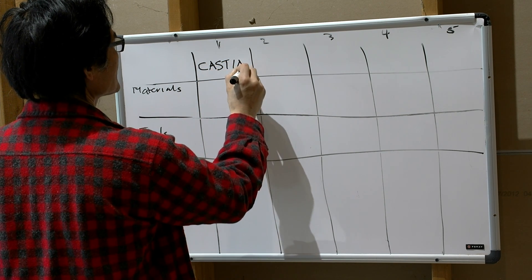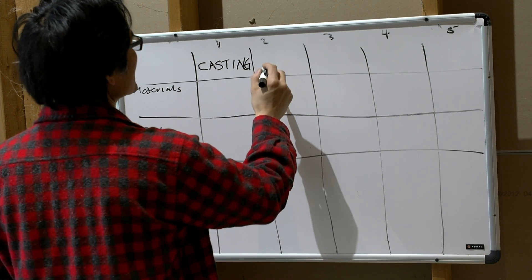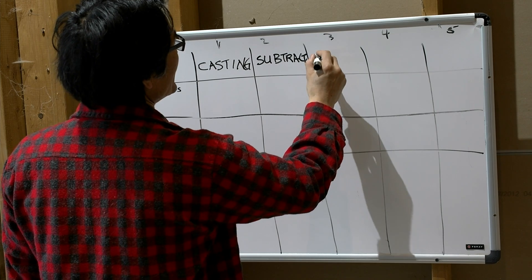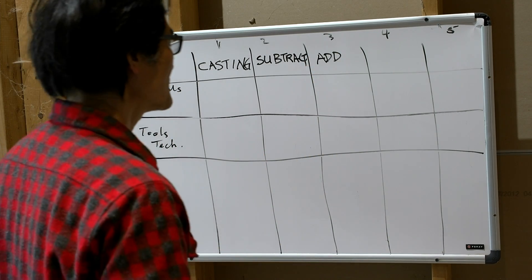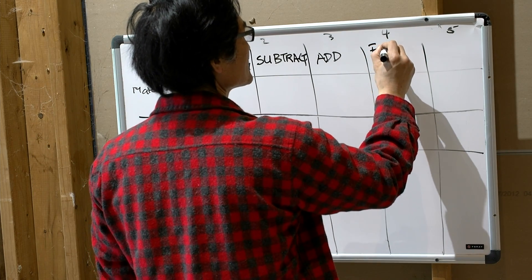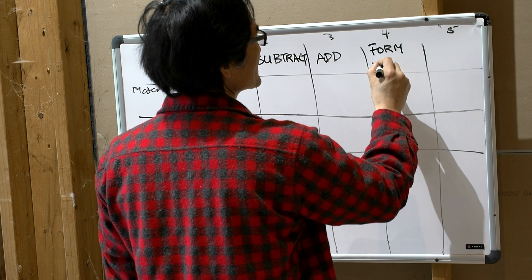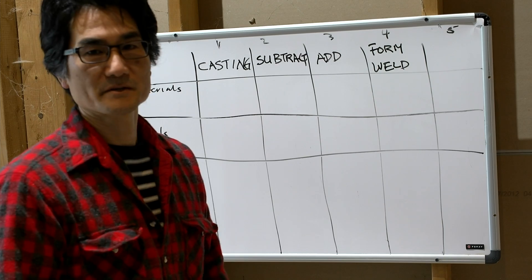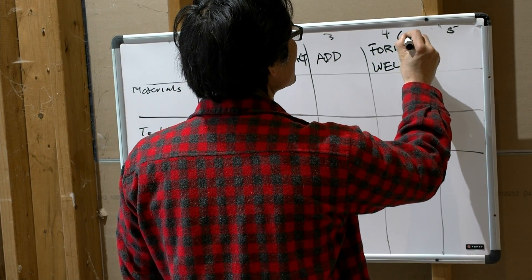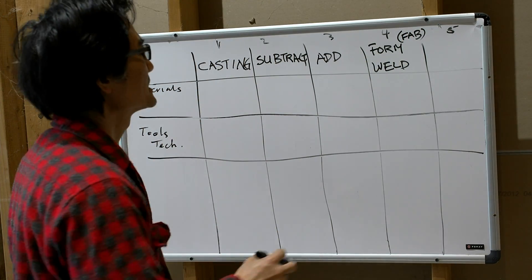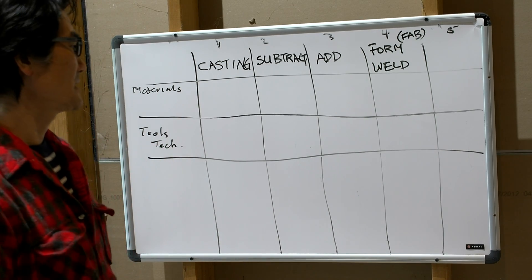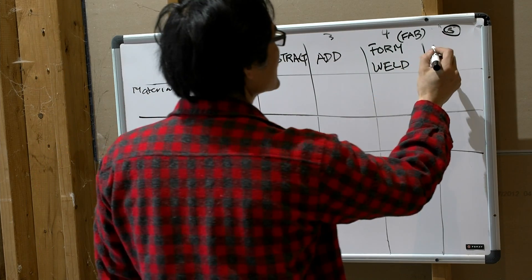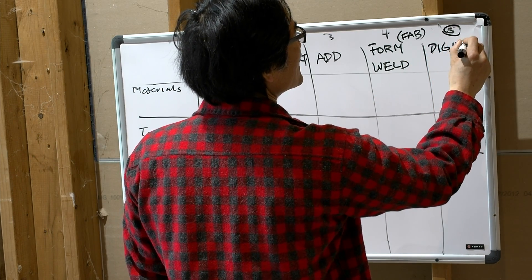There is casting. There are the subtractive processes. There are the additive. There is the forming and welding — when referring to metals, this category would be termed fabrication, or fab for short. And then the fifth category is very broad and actually impacts all the other categories. I will designate it with a circle because it's a special category, and I call this the digital pipeline.